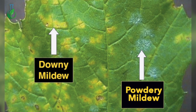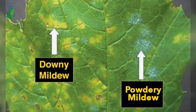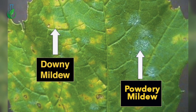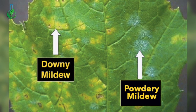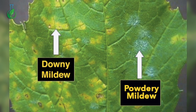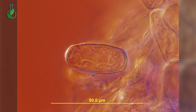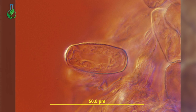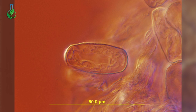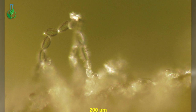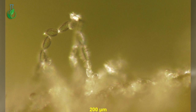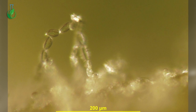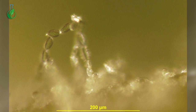Infected leaves may turn yellow and eventually brown as they dry out. The white powdery growth associated with the disease contains mycelium and asexual spores of the fungus. These ellipsoid to barrel-shaped spores are produced in long chains. Although not common, sexual spores within round structures can also be produced.